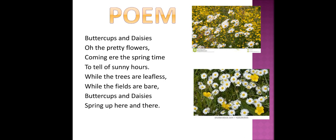Coming year is the spring time to tell of sunny hours. So Buttercups and Daisies come in the spring season. These are the two flowers of the spring season. And what is it about sunny hours? It is about the rainy season — you can see what happens when it's sunny, not even warm, and the season is soothing.